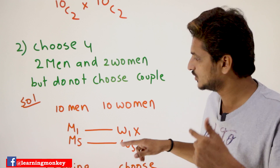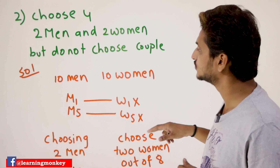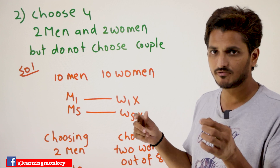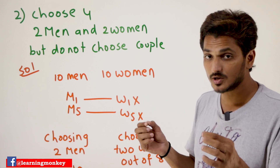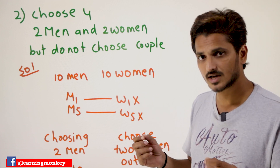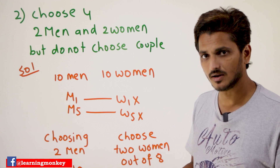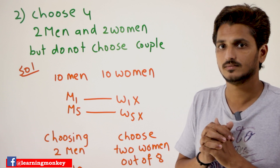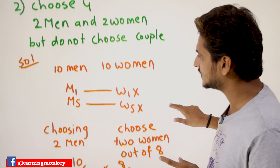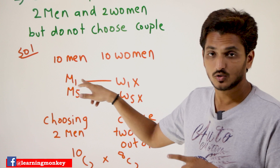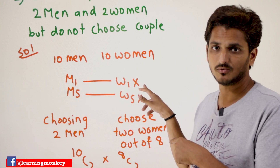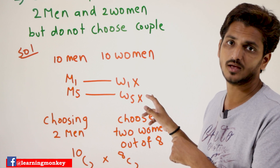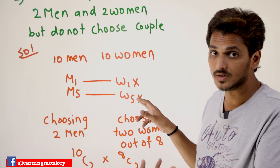What's the meaning of that? You should not have a couple — means you do not choose any couple. There are 10 men and 10 women, and these are couples: M1 and W1 are a couple, M2 and W2 are a couple, M5 and W5 are a couple, M10 and W10 are a couple. In your chosen 4 members, you should not have a couple. So if you choose M1, you are not supposed to choose W1. If you choose M5, you are not supposed to choose W5. They form a couple, and you are not allowed to take couples.